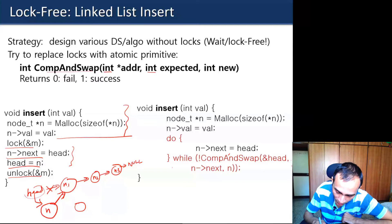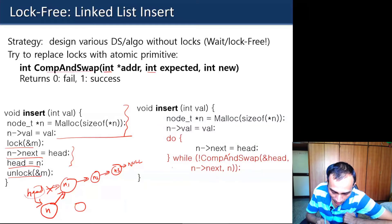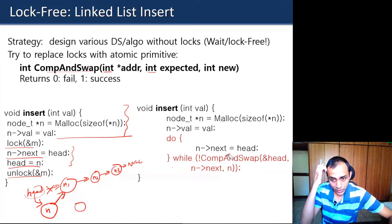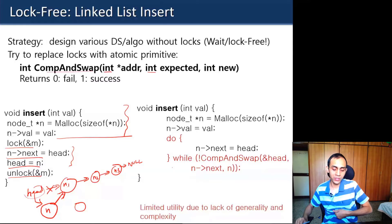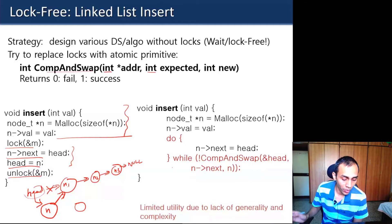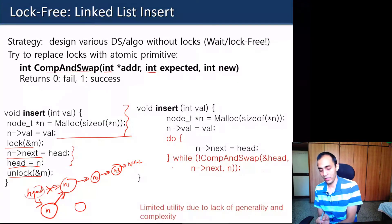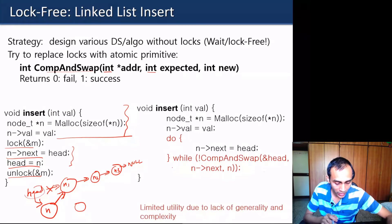The first operation — setting the new node's next to the current head — is safe to do normally; only making the new node the head must be done with compare-and-swap. This is a good approach, and some recent libraries do provide lock-free implementations of basic data structures. However, it has limited utility because it is complex to write, and not easy to generalize to more complex data structures like B-trees.